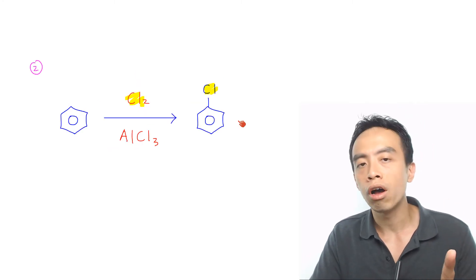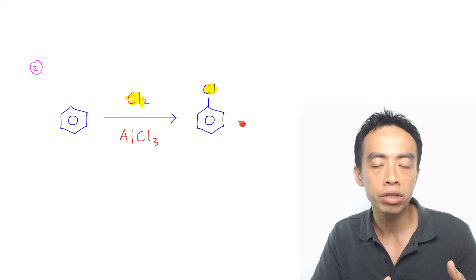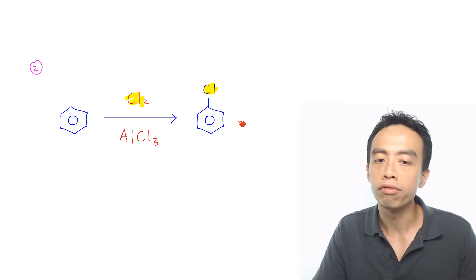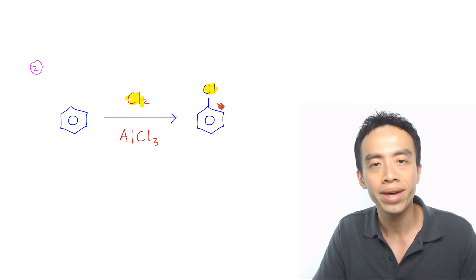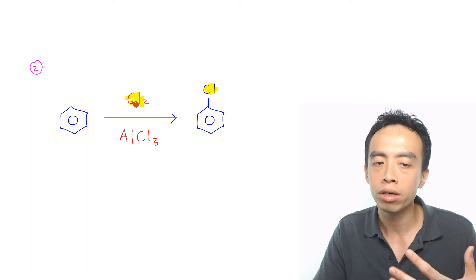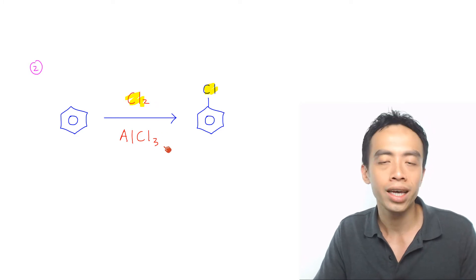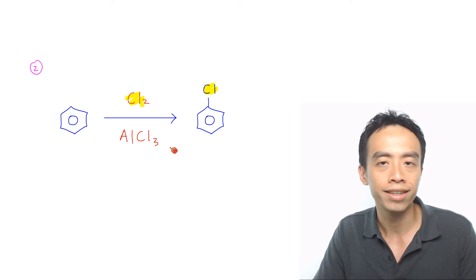The second must-know reaction of benzene is the chlorination of benzene to form chlorobenzene. This is done using chlorine Cl2 with AlCl3 as catalyst.